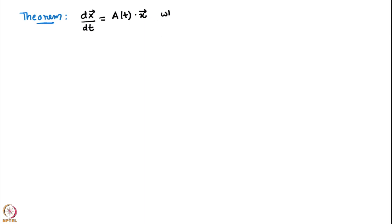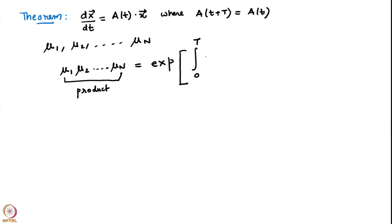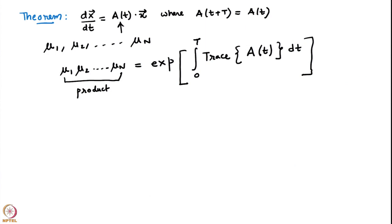The theorem states: if the characteristic numbers of the system are μ₁, μ₂, ..., μₙ, then their product is given by the exponential of the integral from 0 to T of the trace of A(t) dt. The trace of a matrix is the sum of all diagonal elements. So you take the coefficient matrix, add up its diagonal elements to get a function of time, integrate it from 0 to T, and the exponential of that gives the product of all characteristic numbers — a constant.